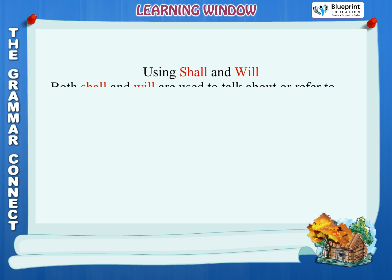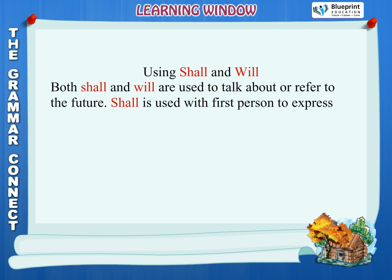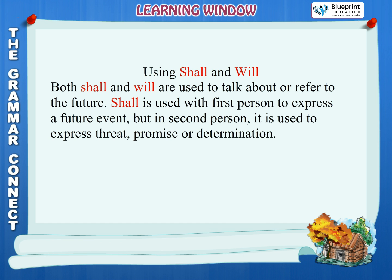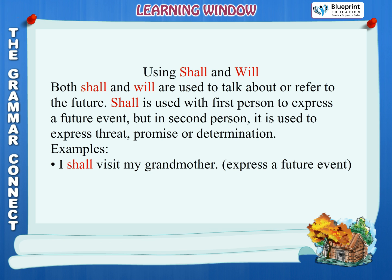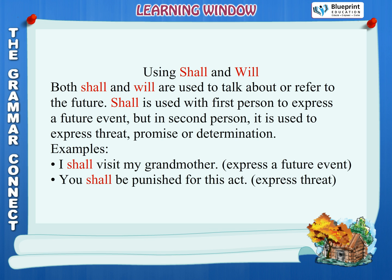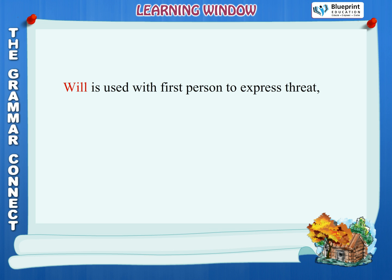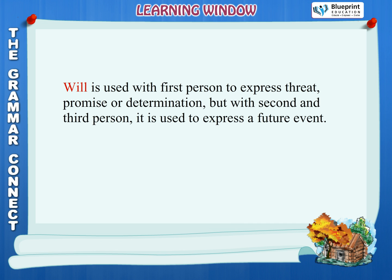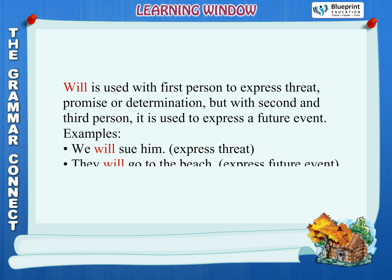Using shall and will. Both shall and will are used to talk about or refer to the future. Shall is used with first person to express a future event, but in second person it is used to express threat, promise or determination. Examples: I shall visit my grandmother — express a future event. You shall be punished for this act — express threat. Will is used with first person to express threat, promise or determination, but with second and third person it is used to express a future event. Examples: We will sue him — express threat. They will go to the beach — express future event.